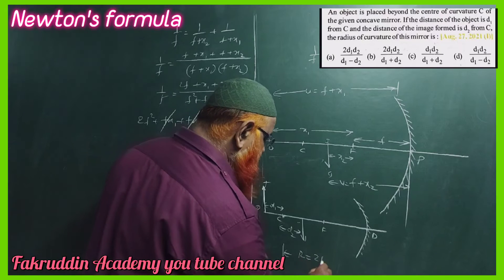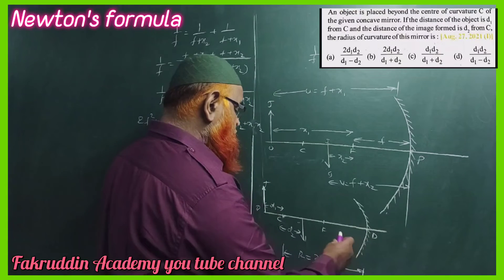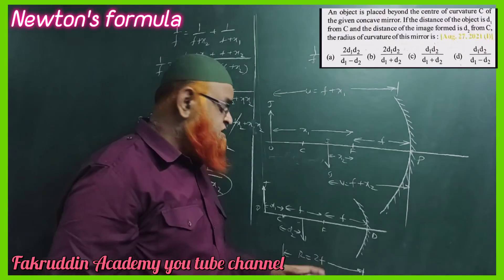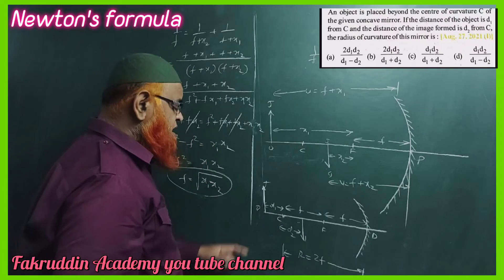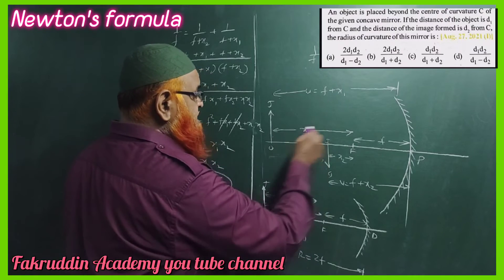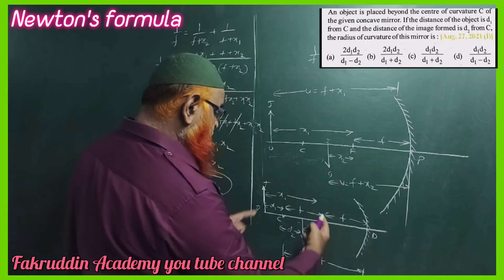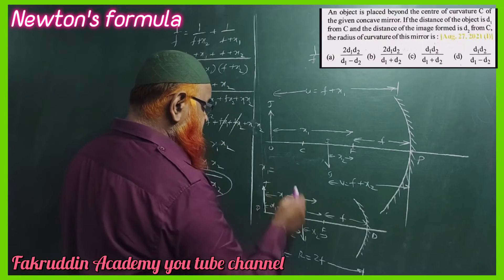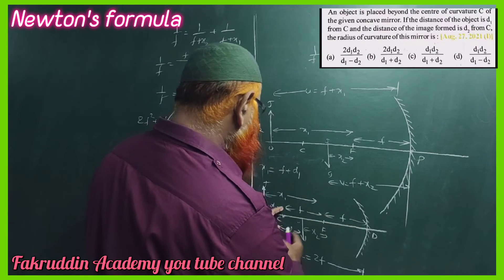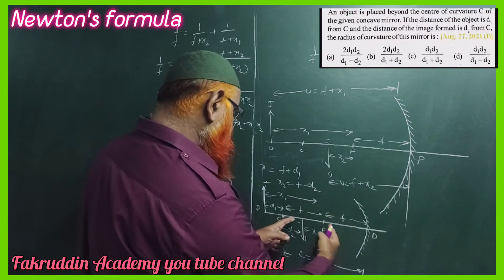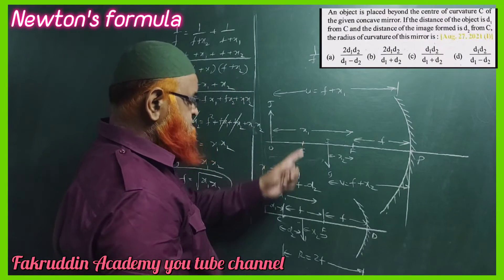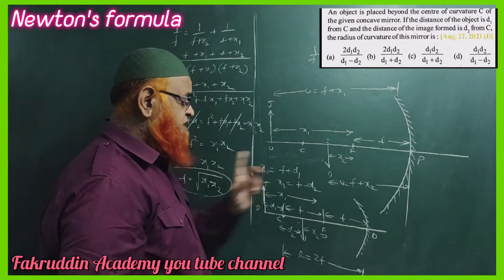You all know that the radius of curvature is taken as 2 times the focal length, so the distance from the pole to F is f, and from F to C is also f. So x1, the distance from the focal point to the object, is f plus d1, and x2, the distance from the focal point to the image, is f minus d2.